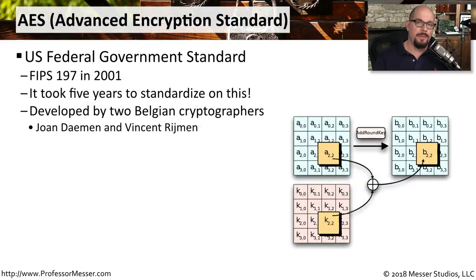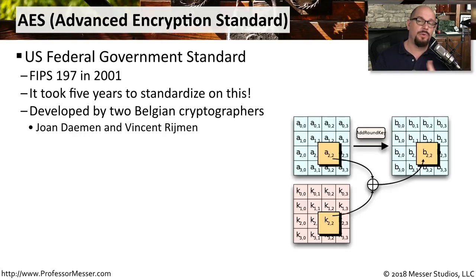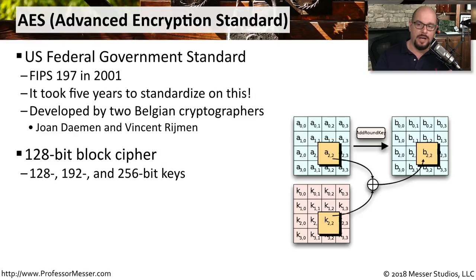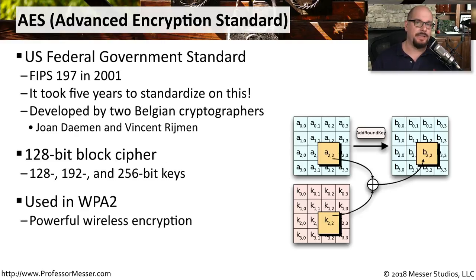Undoubtedly the most popular symmetric encryption in use today is AES, or the Advanced Encryption Standard. This is also a standard of the United States federal government, added to FIPS 197 in the year 2001. It took five years to standardize what would effectively replace DES. AES used a block cipher twice the size of DES — you can encrypt 128 bits in a single pass. AES supports 128, 192, and 256-bit key sizes.